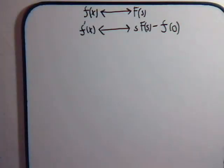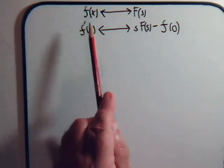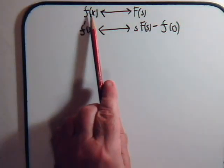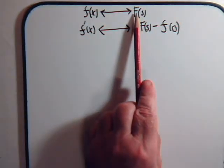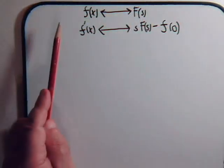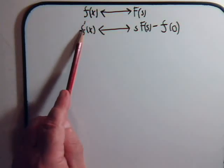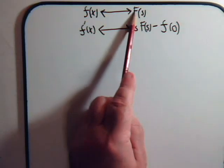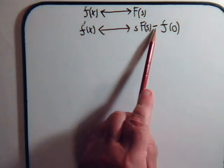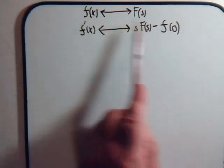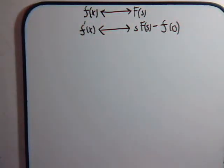Remember, what we have been working with in previous videos is: if there's a function f of x that has a corresponding Laplace transform, then if we take the derivative of that function, its Laplace transform is going to be equal to s times the Laplace transform of the original function minus the original function evaluated at zero.